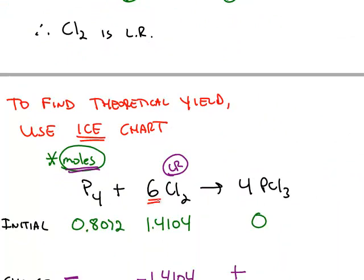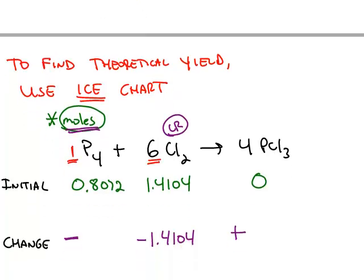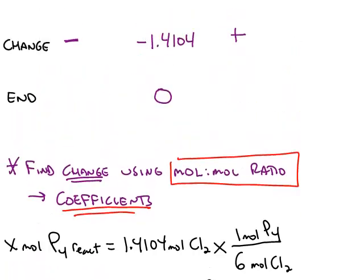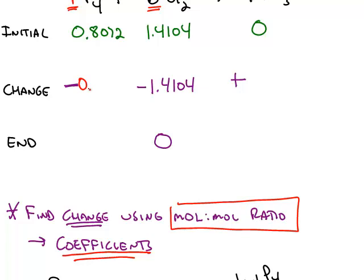Every time the reaction takes place, it requires 6 moles of chlorine to react with 1 mole of phosphorus. So this gives me an answer of 0.2351 moles of phosphorus that are reacting, so I know that this change is negative 0.2351. I find the end by just subtracting the change from the initial, and at the end the phosphorus will be 0.5721 moles.